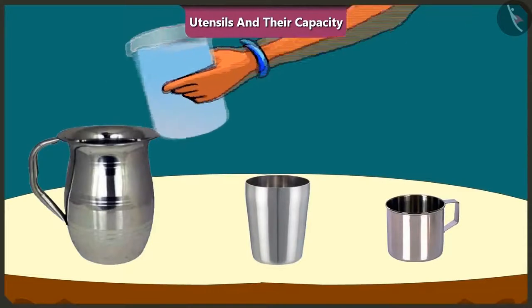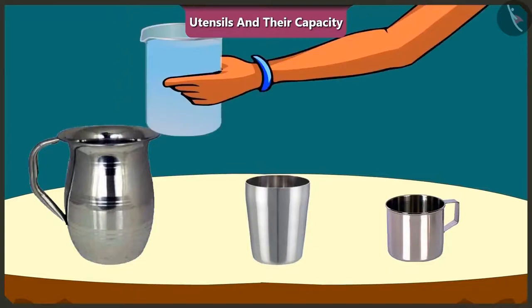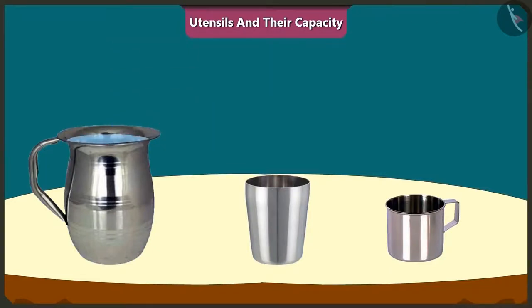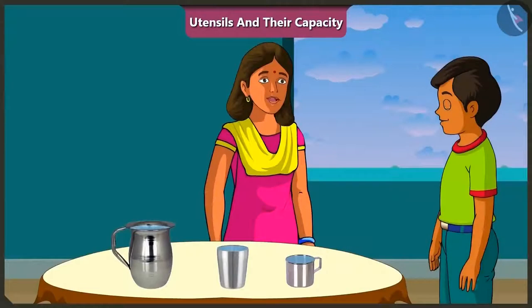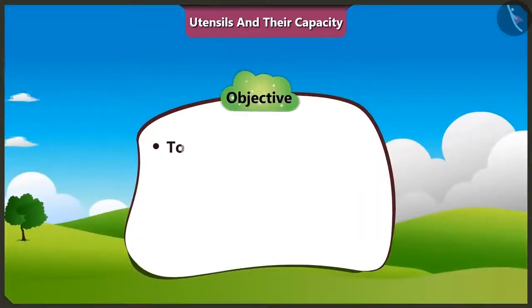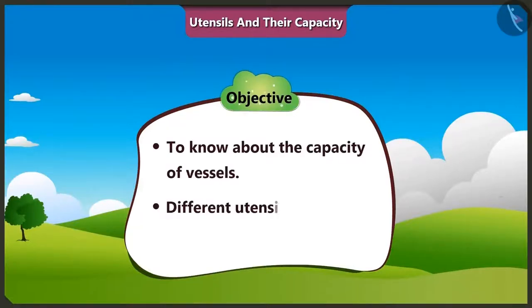See, I will pour water in this jug. The amount of water that can fill each of these vessels respectively is called its capacity. Is this the way to know the capacity of any vessel? Yes, Mishtu. Come on, let us know more about the capacity of vessels and we will understand how different vessels have different capacities.